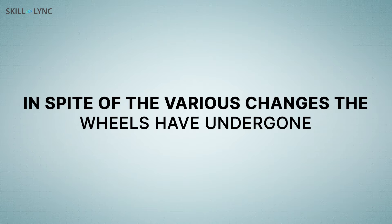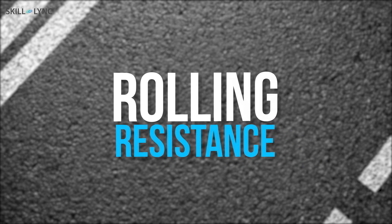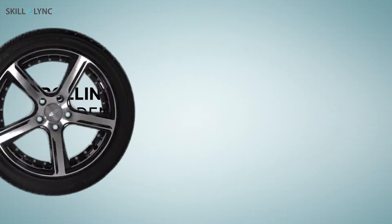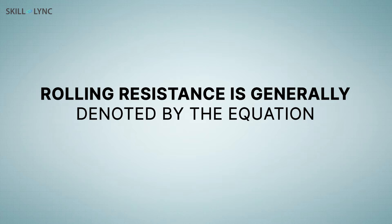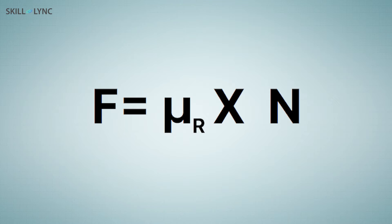In spite of the various changes the wheels have undergone, there was still something holding them back from becoming an ideal wheel. This is called rolling resistance, and this will be our topic for today. Rolling resistance is denoted by the equation: force equals mu r multiplied by N. Here, F is the value of rolling resistance, mu r denotes the coefficient of rolling resistance, and N is the normal reaction between the surface and the wheel.